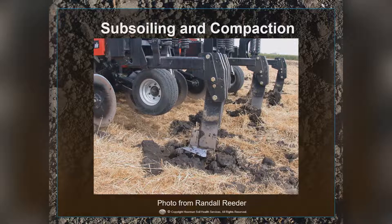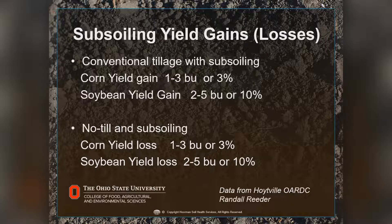Research from Ohio State from Randall Reeder compared subsoilers to cover crops. In a conventional tilled system with subsoiling, corn yield gains were 1 to 3 bushels (about 3%), and soybeans were 2 to 5 bushels (about 10%). But in a no-till field that was subsoiled, there was actually a yield decrease — 1 to 3 bushels for corn and 2 to 5 bushels for soybeans — because they were smearing the soil in the wetter no-till conditions. Subsoiling only works well if the soil is dry.